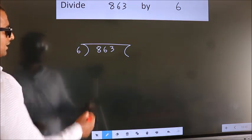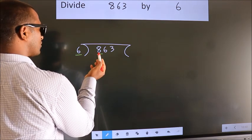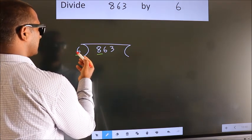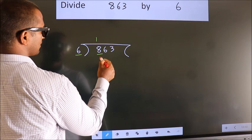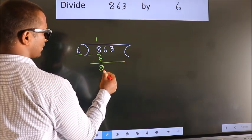Next. Here we have 8, here 6. A number close to 8 in the 6 table is 6 times 1 equals 6. Now we subtract and get 2.